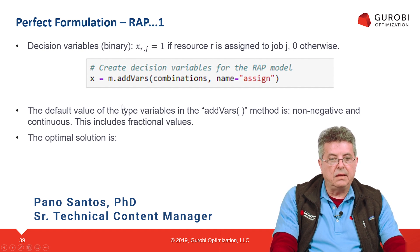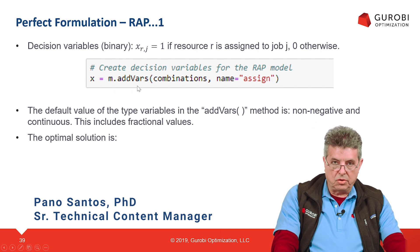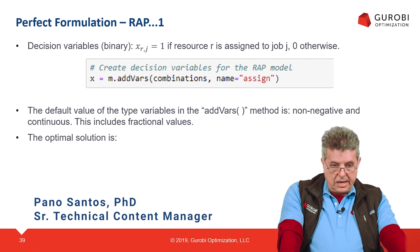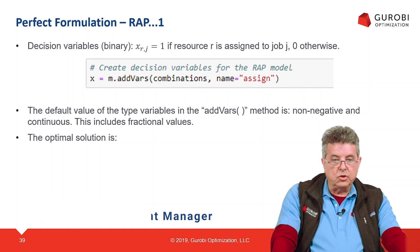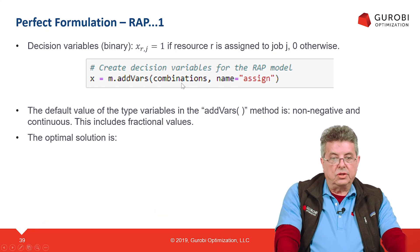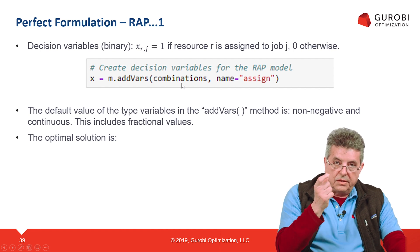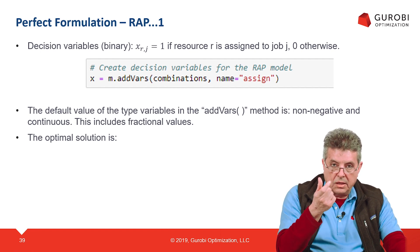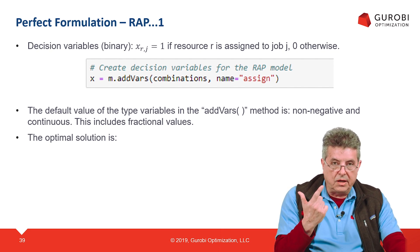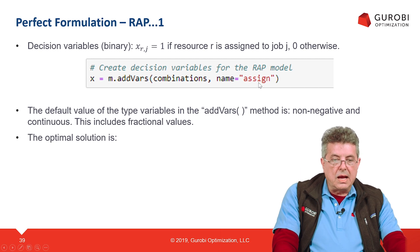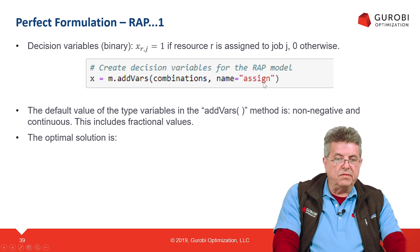The way we defined the variable using the Gurobi Python API was using the addvars method. The arguments for this method were the keys of the multi-dimensional dictionary that defines the matching scores — this combination of resource and job indices. So we have one decision variable per matching score, along with the name of the variable.